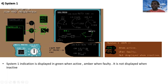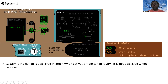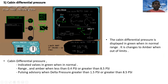System number one is controlled by cabin pressure controller CPC1, which drives motor one. The system one indication follows the same logic: displayed in green when active, amber when faulty, and not displayed when inactive.